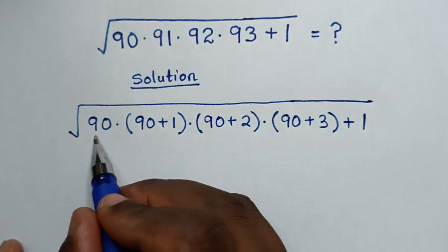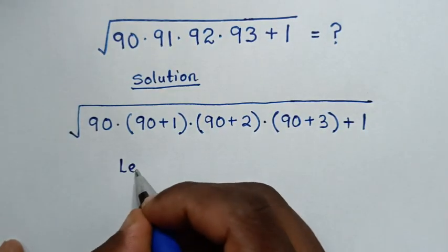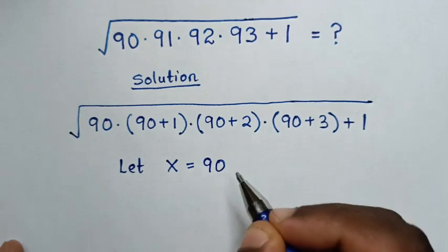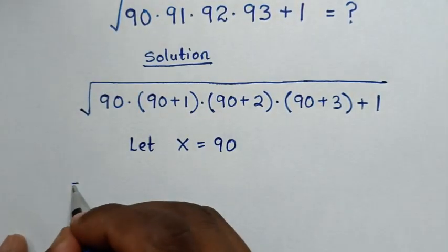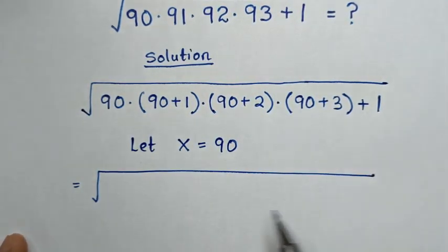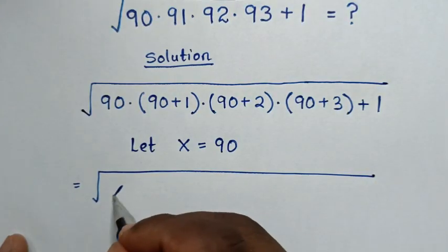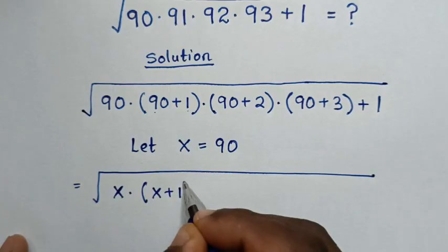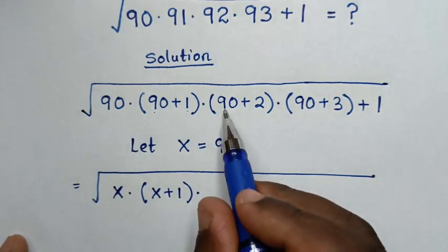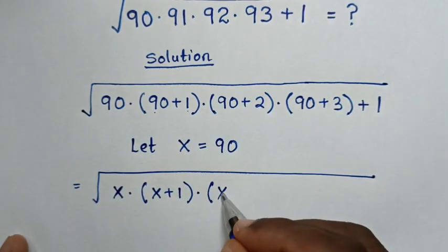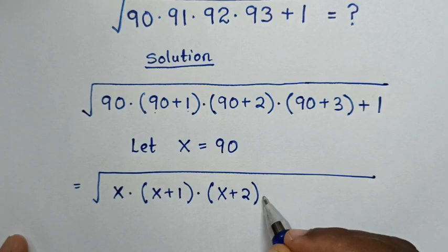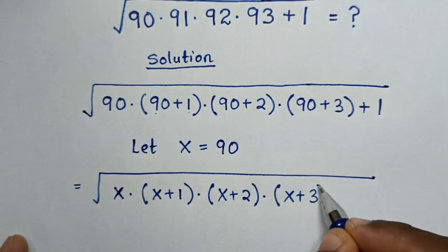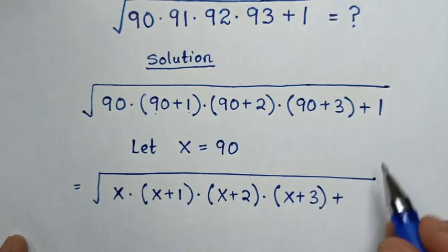From here, 90 is common, so we let x equal to 90. Then it will be equal to square root of x times (x+1) times (x+2) times (x+3) plus 1.